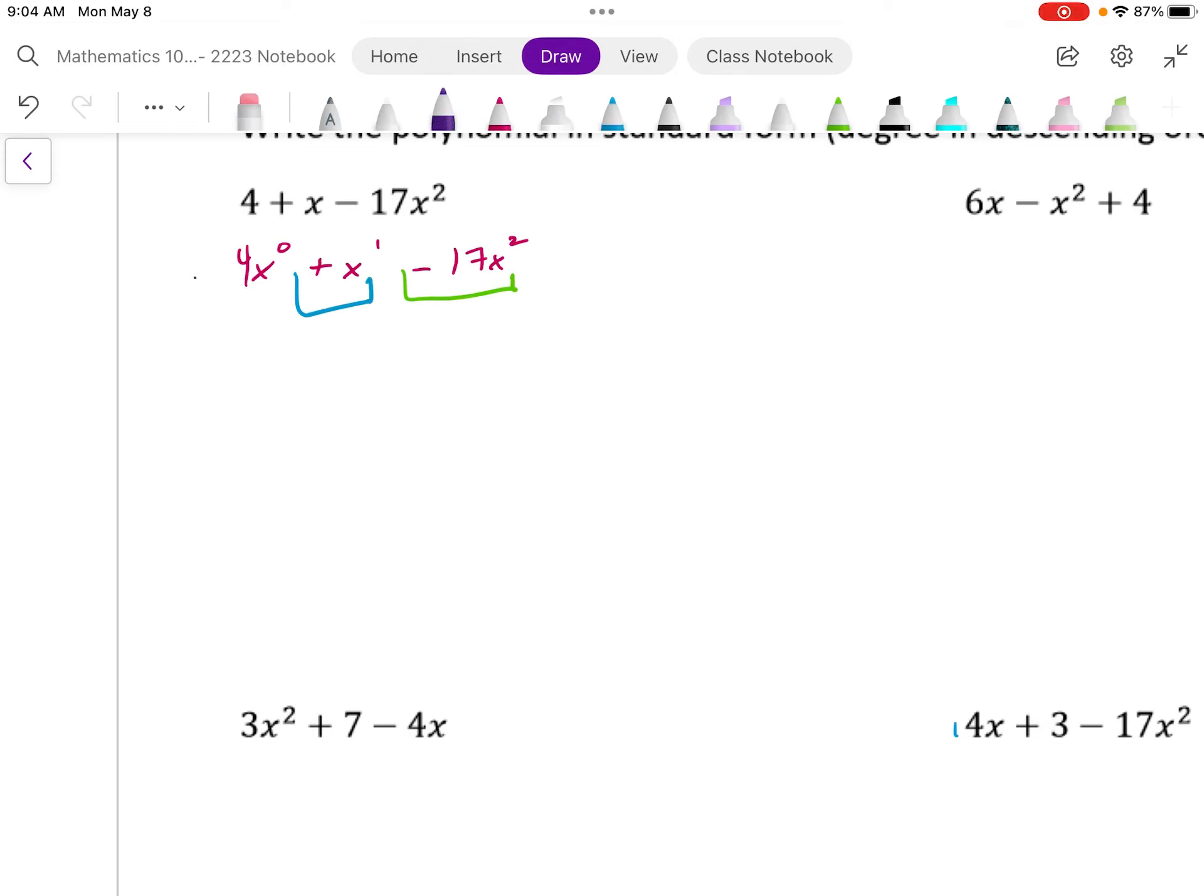I've basically put each of these in a box. Now I'm going to move around the terms. I can do that. So I'm just going to write negative 17x squared. I'm going to write that first simply because my exponent is the highest.